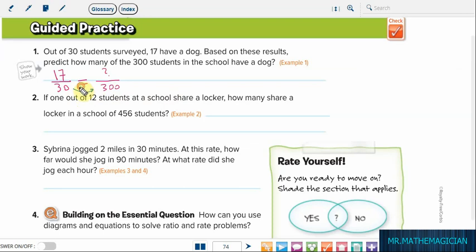So we multiply by 10 here also. This will give 17 times 10. So the answer is 170 students.